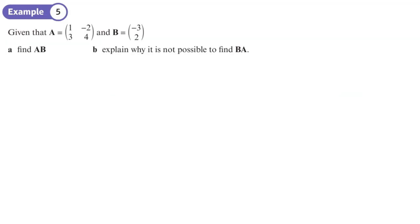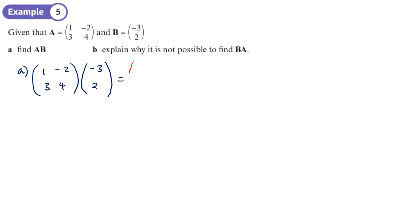Now we're going to do A times B — the order in which the letters are written is the order we do them. The first element: 1 times negative 3 = negative 3, minus 4 = negative 7.